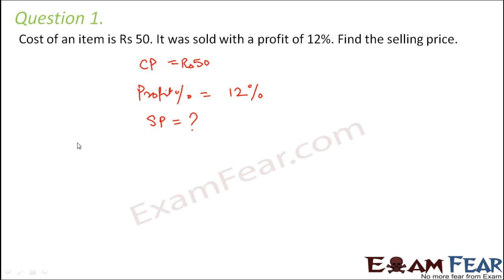So how would we find out the selling price? For that we need to find out the actual profit, because this is the profit percentage. So we already saw that profit percentage is nothing but profit which is made out of the cost price, multiply by 100.